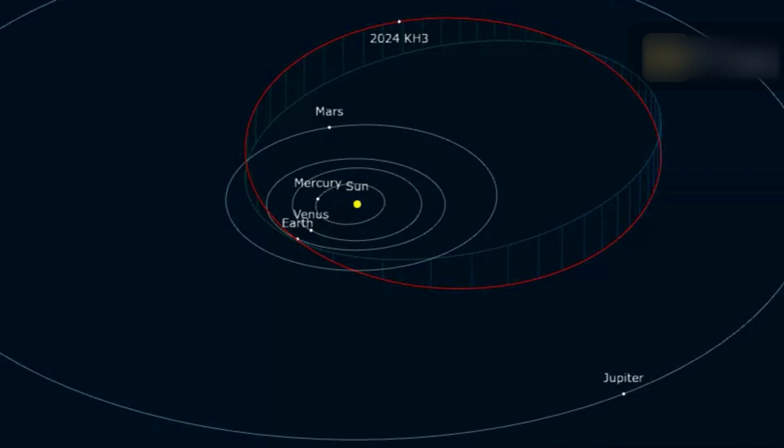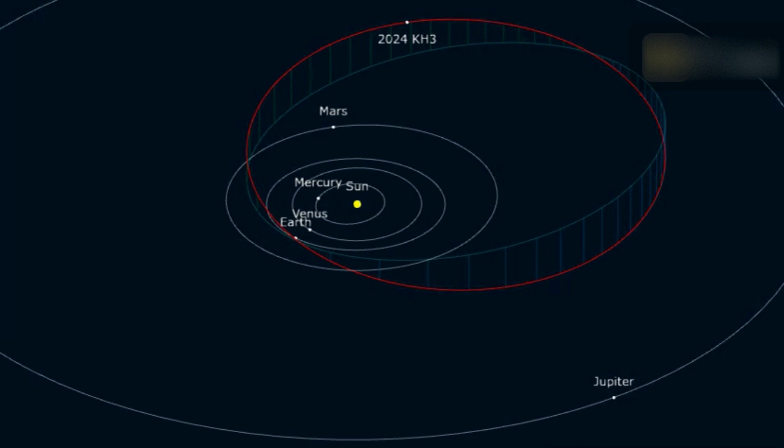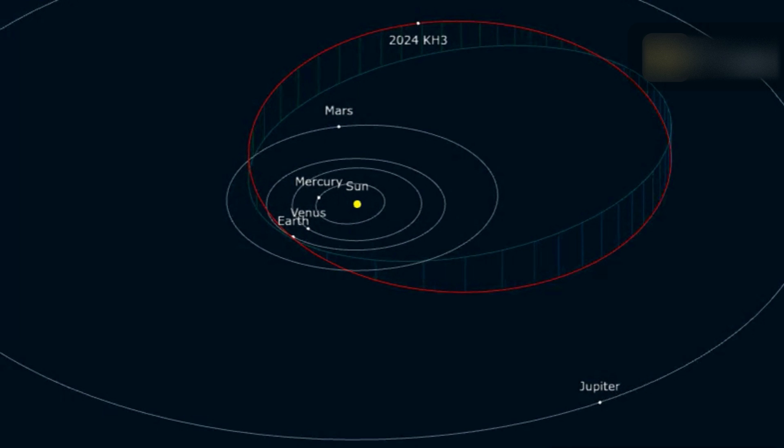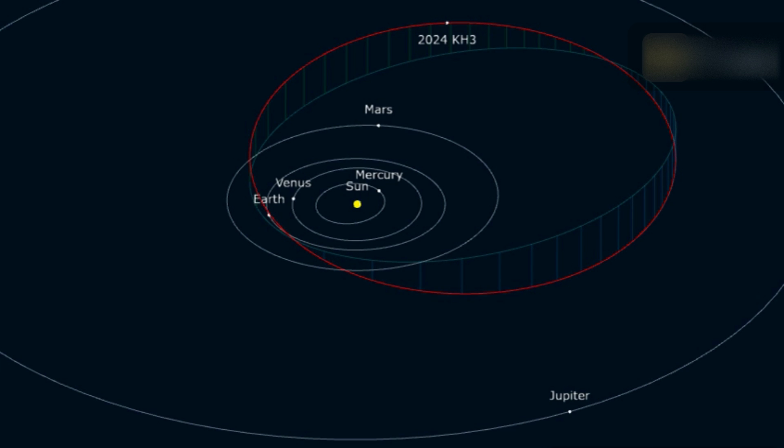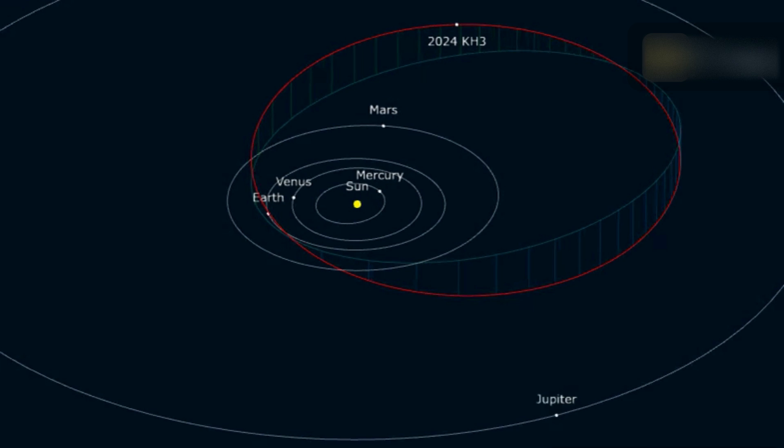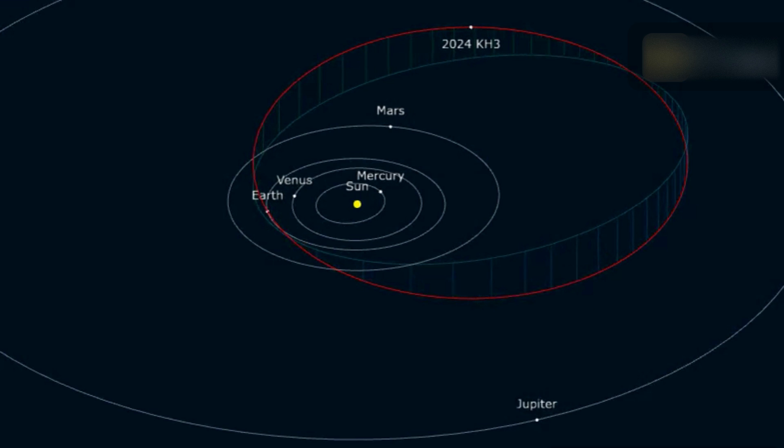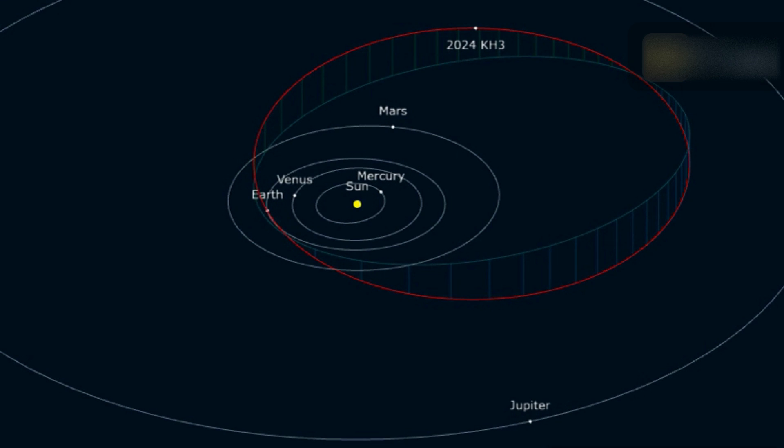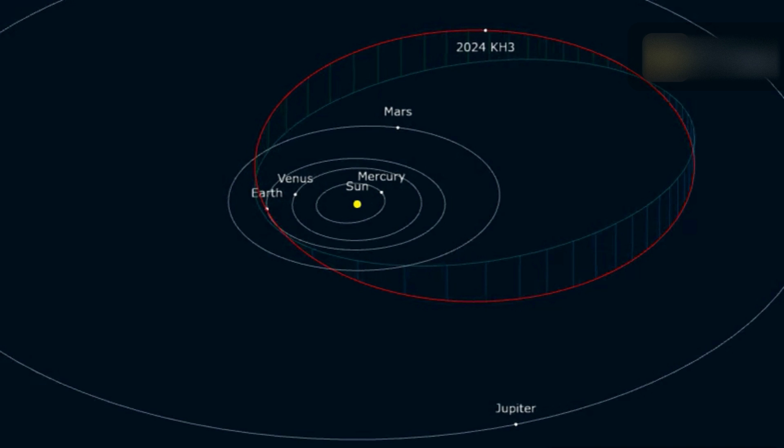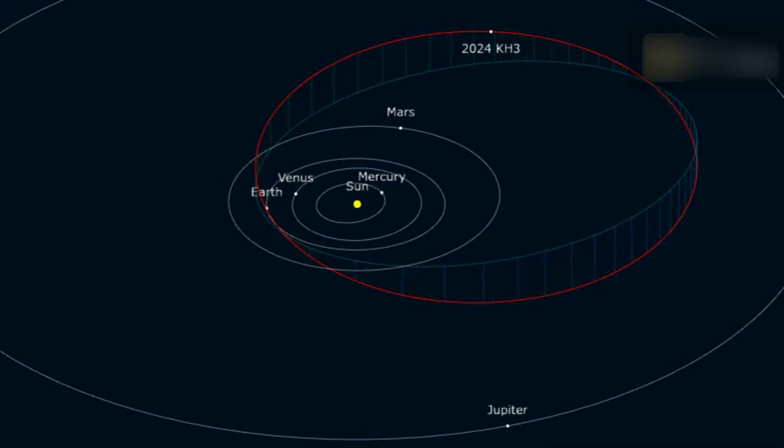Asteroid 2024 KH3 is potentially hazardous. Potentially hazardous asteroids are asteroids that have the potential to come very close to Earth and are large enough to cause significant damage if they collide with it. Potentially hazardous asteroids are usually defined by their size and their proximity to Earth's orbit.